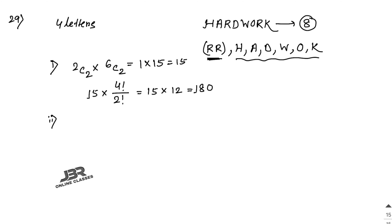Case 2: The word contains 4 different letters, chosen from the 7 distinct letters (1 R plus H, A, D, W, O, K). The number of selections is 7C4 = 35. Within each selection, 4 different letters can be arranged among themselves in 4! ways. So Case 2 gives 35 × 4! = 35 × 24 = 840.